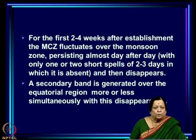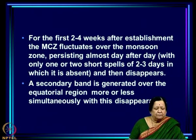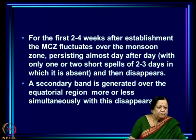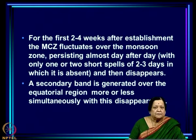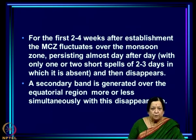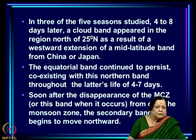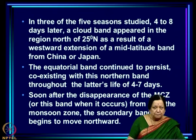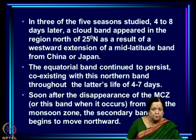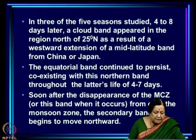A secondary band is generated over the equatorial region more or less simultaneously with the disappearance of the MCZ. In 3 of the 5 seasons studied, 4 to 8 days later a cloud band appeared north of 25°N as a result of westward extension of a mid-latitude band from China or Japan. All this will become clearer when illustrated with an example from 1975.